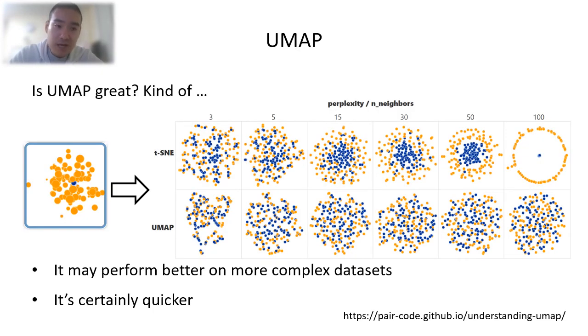This time, UMAP may perform better on a more complex dataset, and it is definitely quicker than t-SNE. But let's look at this example. This is a dataset with a dense, tight cluster inside of a wide, sparse cluster. Here is the result of t-SNE, and here is the result of UMAP. And we can see UMAP is unable to separate the two nested clusters.